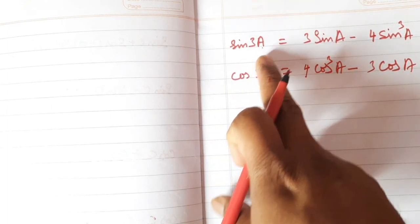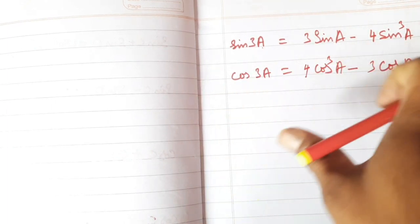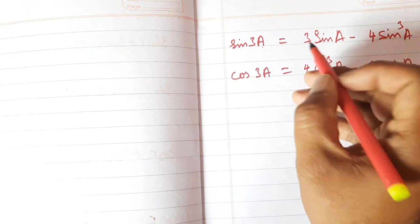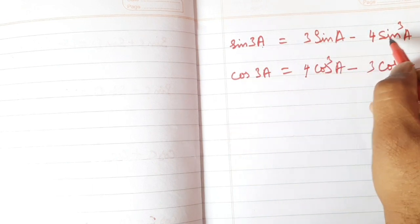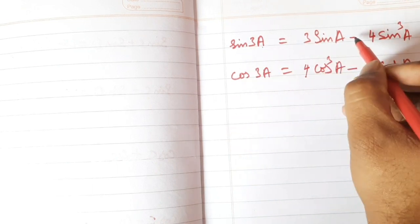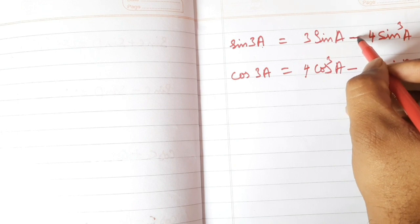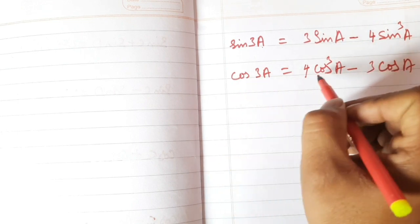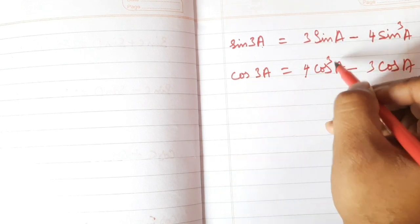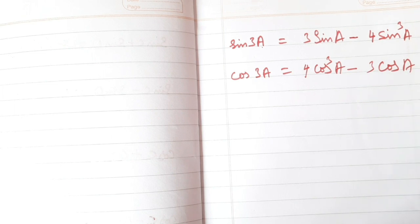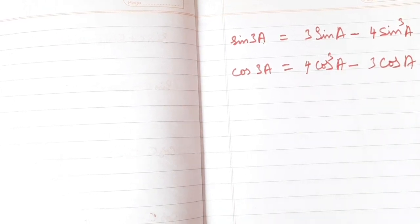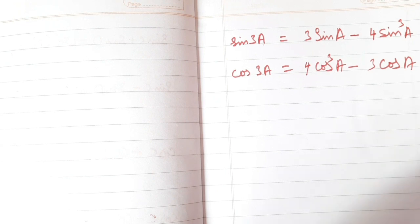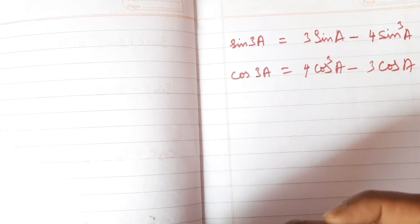This is the sin 3a and cos 3a formula. Sin 3a is equal to 3 sin a minus 4 sin cubed a. Cos 3a is equal to 4 cos cubed a minus 3 cos a. So next we will mention the basics.